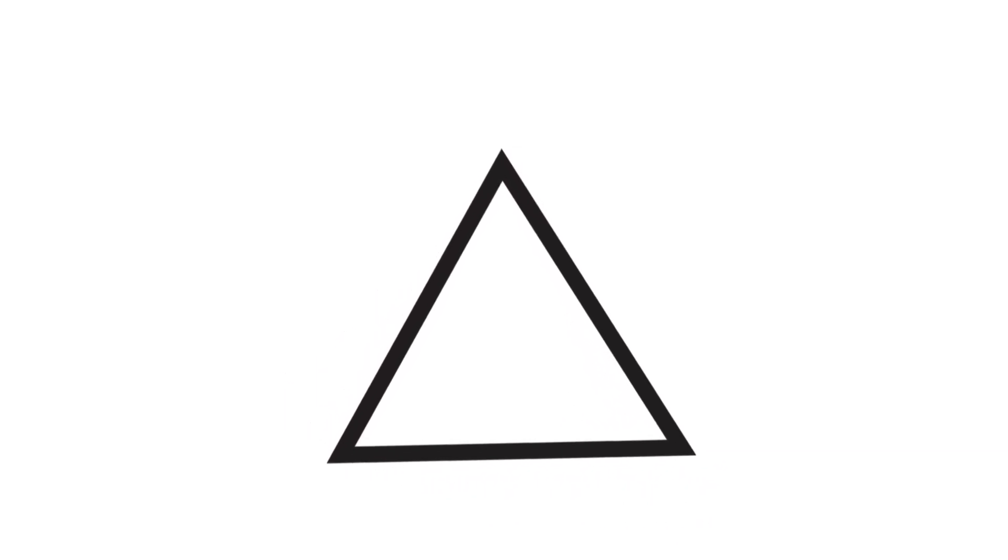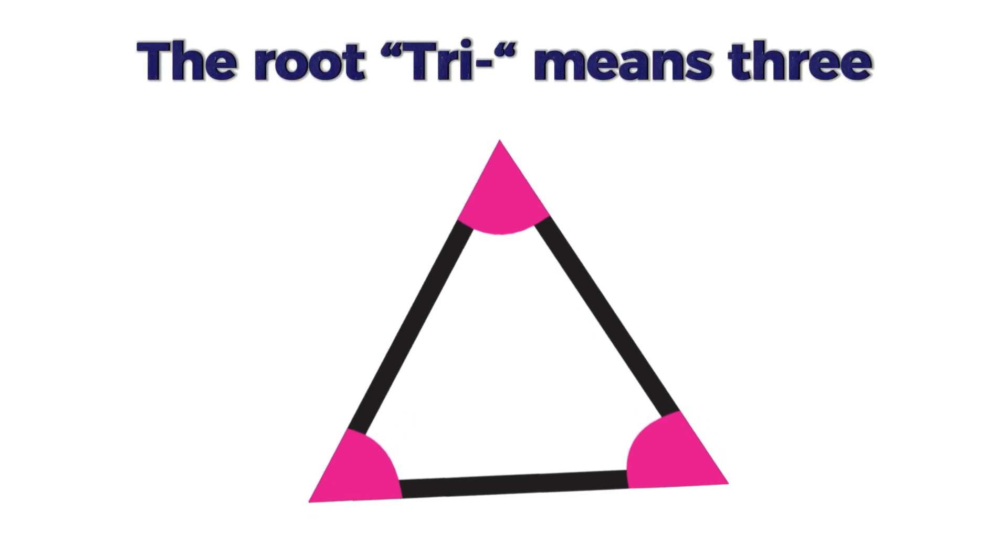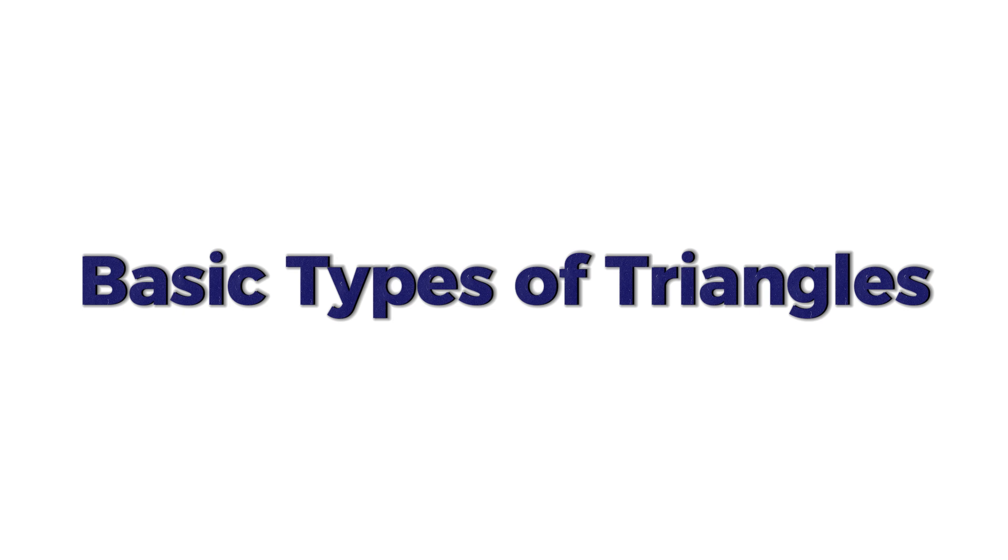Triangle comes from the Latin word triangulus, which means three-cornered or having three angles. The root tri means three. Let's begin with the basic types of triangles.